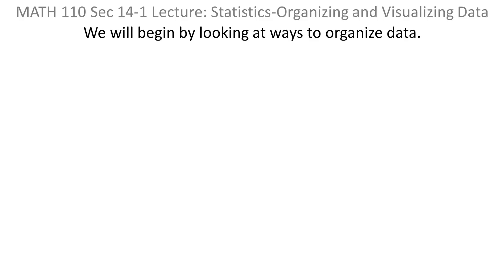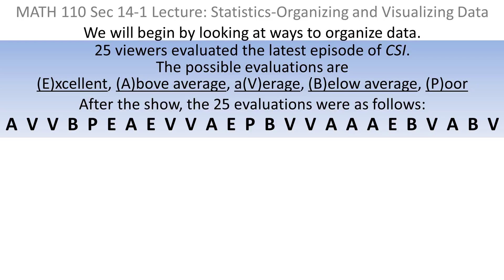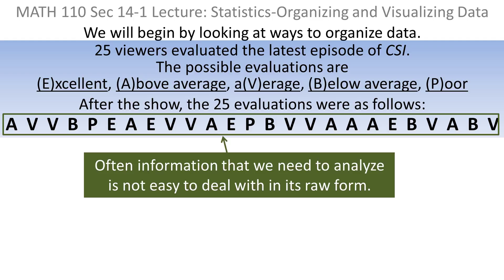We'll begin by looking at ways to organize data. Suppose 25 viewers evaluated the latest episode of CSI. The possible evaluations are E for excellent, A for above average, V for average, B for below average, and P for poor. After the show, the 25 evaluations were as follows. Oftentimes, information that we need to analyze is not easy to deal with in its raw form.